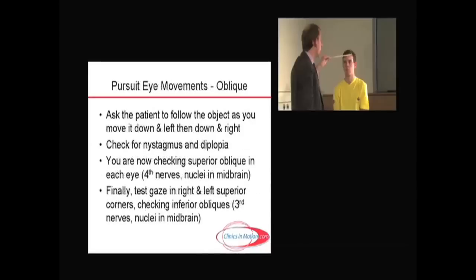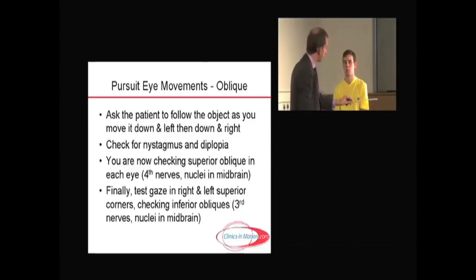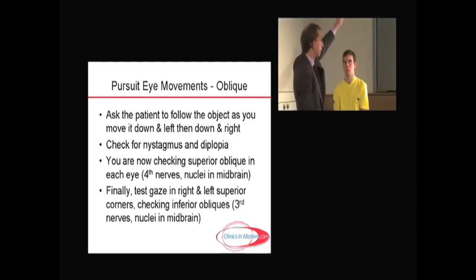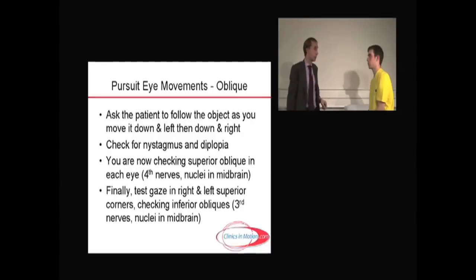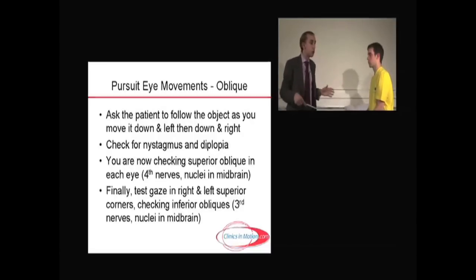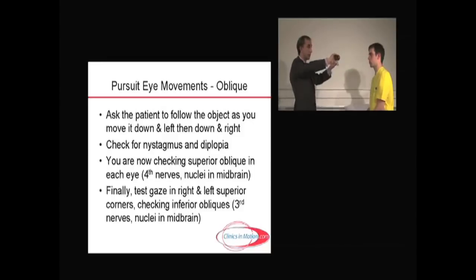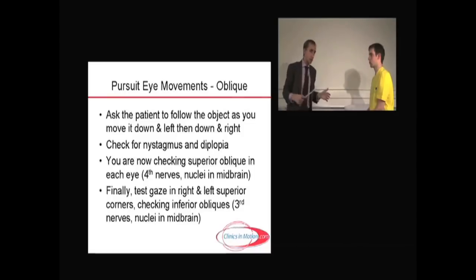For the oblique muscles, go down into the corners: that's the fourth nerve on the left and the fourth nerve on the right. The inferior obliques are tested by going up and into the corners, and again both are supplied by the third nerve. In summary, keep the patient's head still, go from left to right to center, then up, then down, then into the corners. Understanding the eye movements is the most important thing before you can dissect what causes dysfunction.